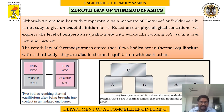The Zeroth Law of Thermodynamics mainly discusses temperature — specifically the equilibrium of temperature. Temperature is a measure of hotness or coldness. We cannot define it exactly based on physical sensations, so we express temperature qualitatively using words like freezing cold, cold, warm, hot, and red hot. The Zeroth Law states that two bodies in thermal equilibrium with a third body are also in thermal equilibrium with each other.